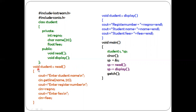The read member function is defined outside the class. Void is the return type, meaning it does not return any value. Student is the name of the class, the two colons are the scope resolution operator, and read is the member function. Inside, we use cout to prompt and cin.getline to accept name with size 20, cin to accept register number, and cin to accept fees — so all three data members are read.